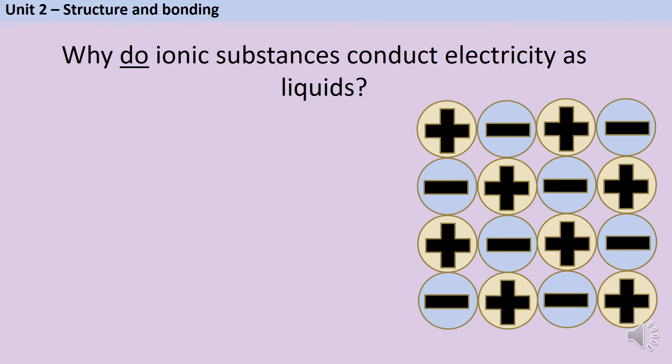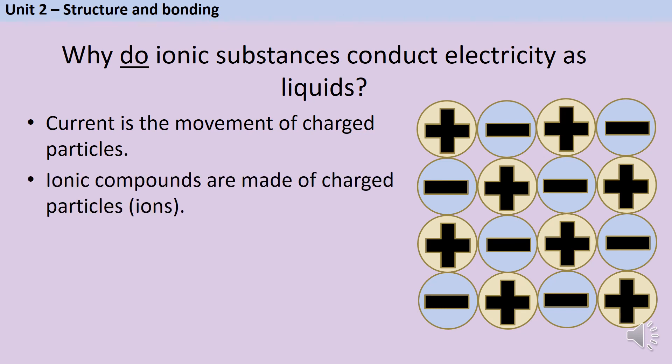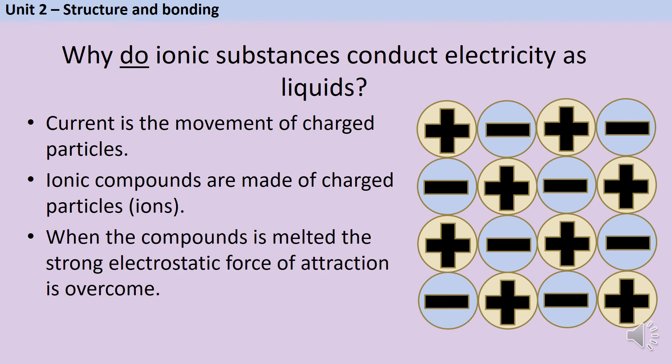I've just explained why a solid ionic compound doesn't conduct electricity, but can you now pause the video and explain why a liquid ionic compound does? Pause the video and then we'll go through the answer. As we've just said, current is the movement of charged particles, and ionic compounds are made of charged particles, those positive and negative ions. When a substance is heated up until it melts, the strong electrostatic force of attraction is overcome by the energy, and that means that the ions are free to move.